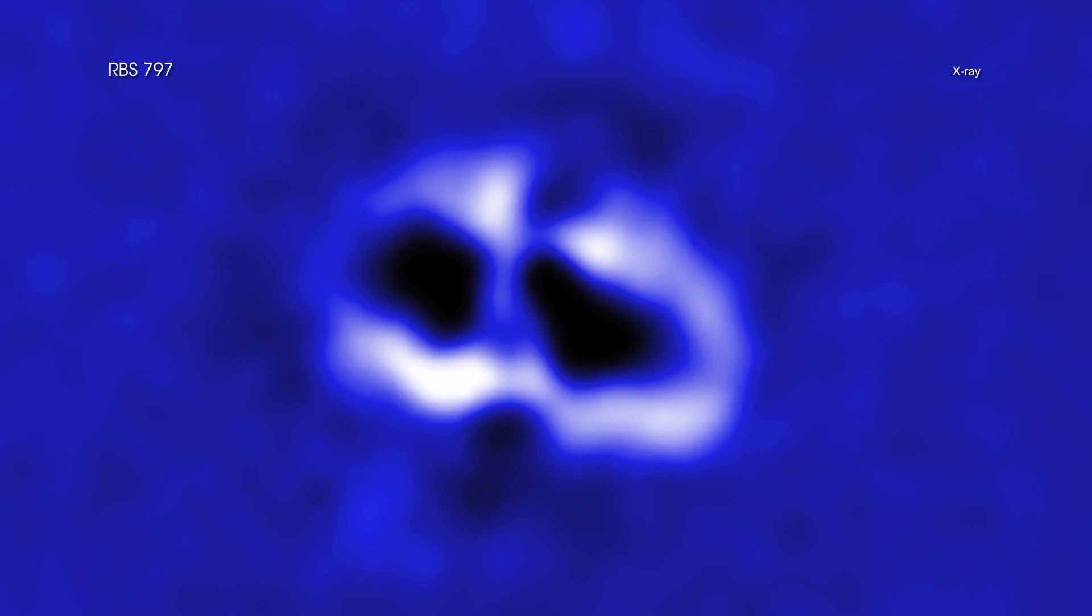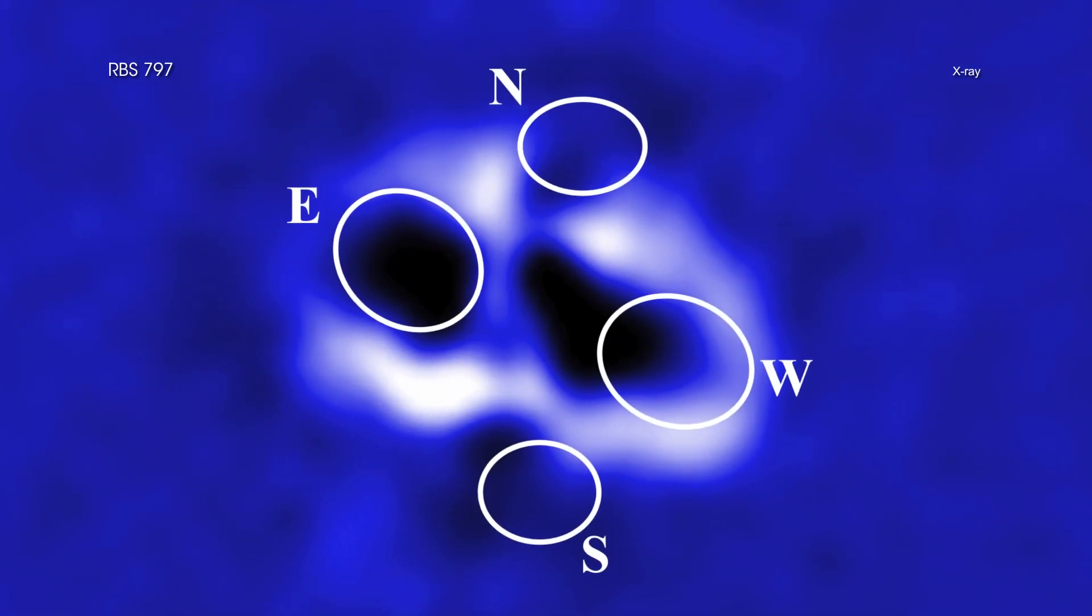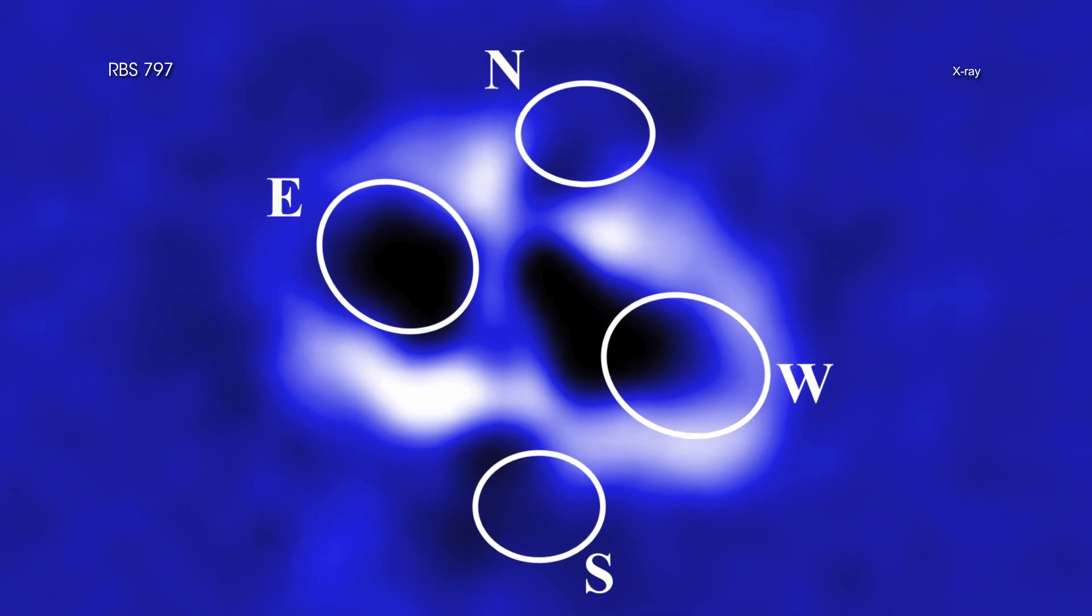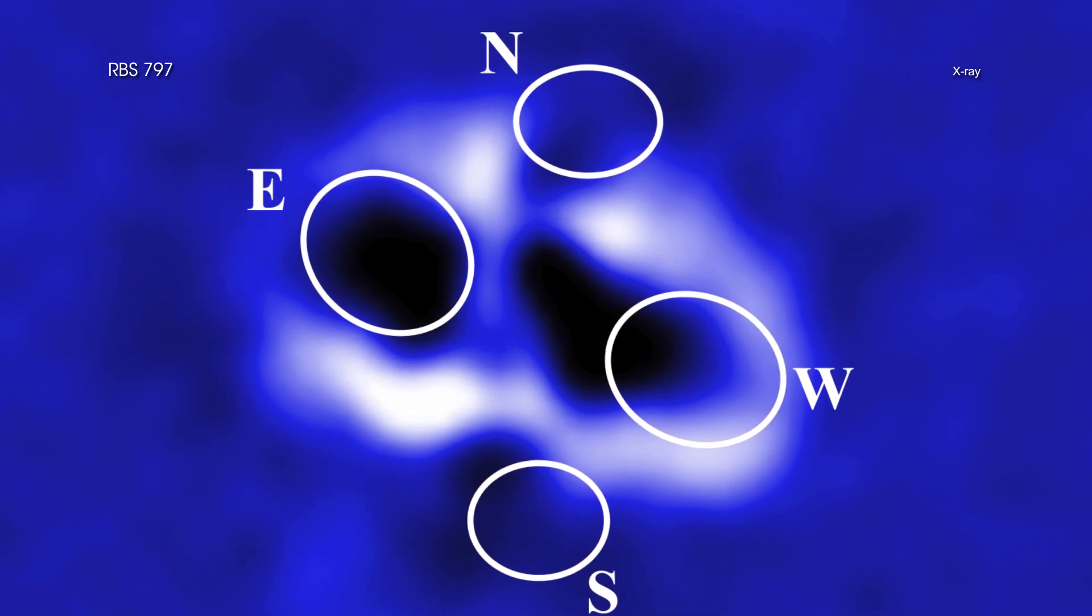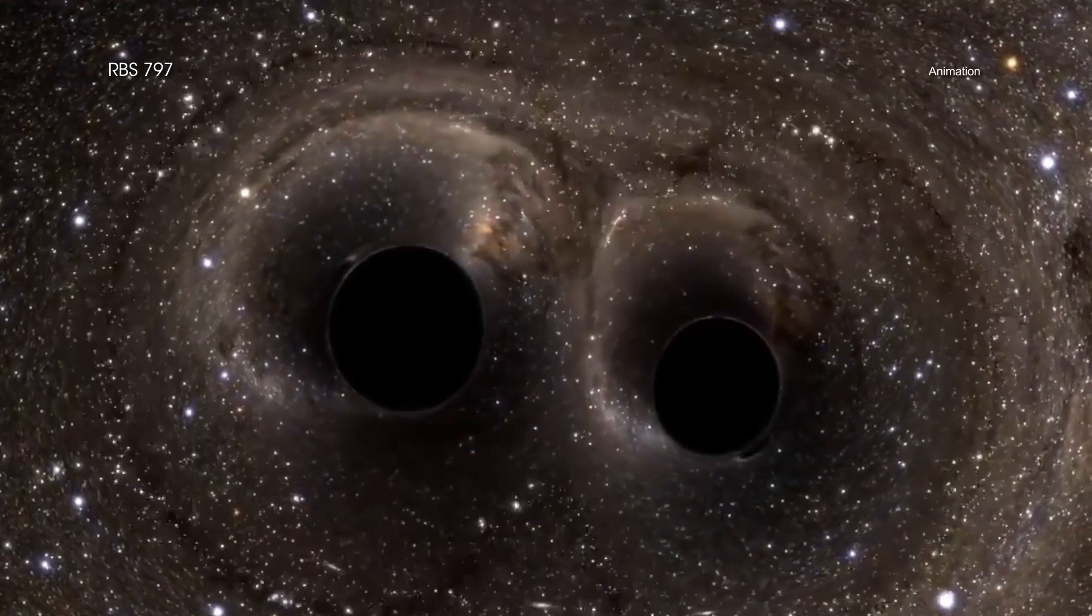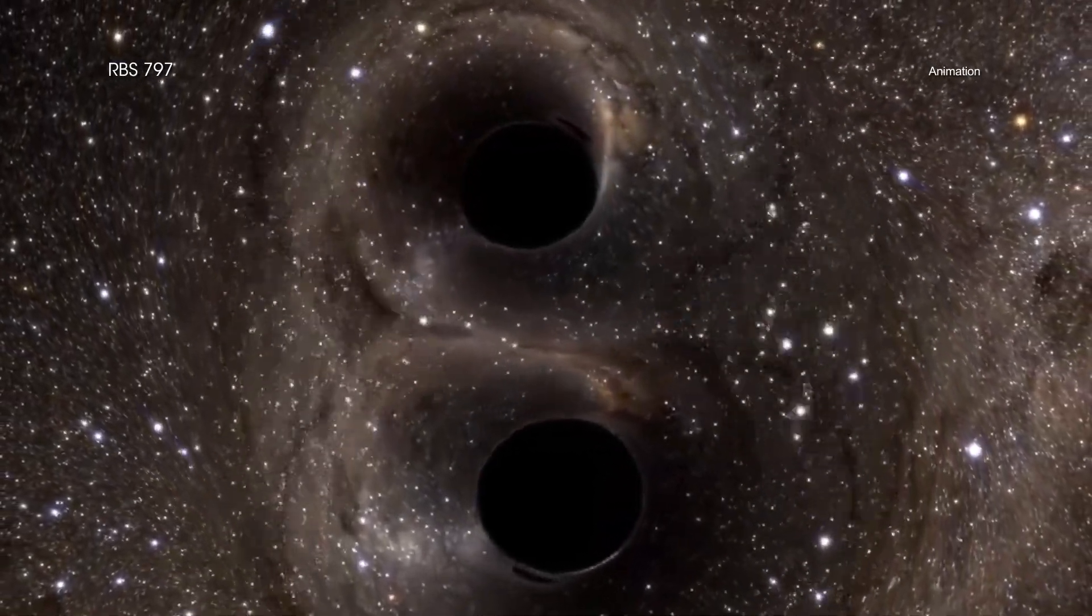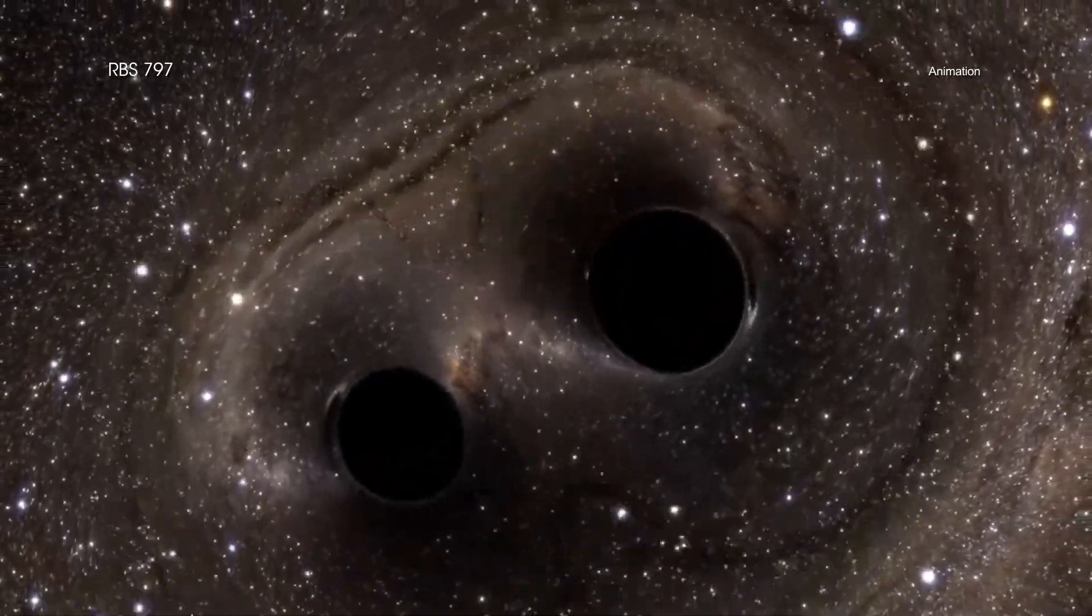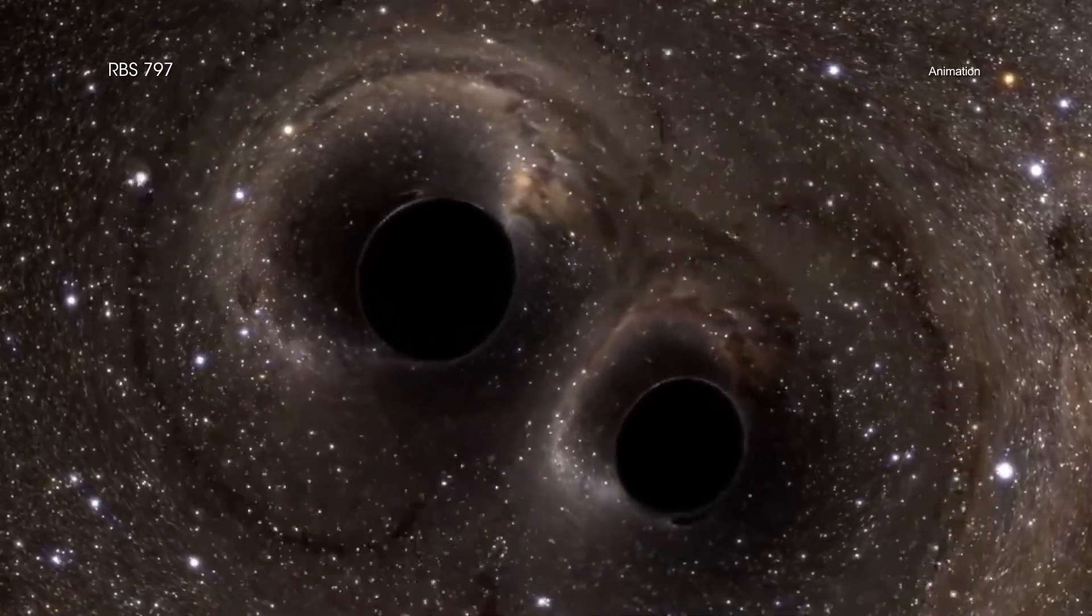Scientists have found four enormous cavities, or bubbles, at the center of a galaxy cluster using NASA's Chandra X-ray Observatory. This unusual set of features may have been caused by eruptions from two supermassive black holes closely orbiting each other.